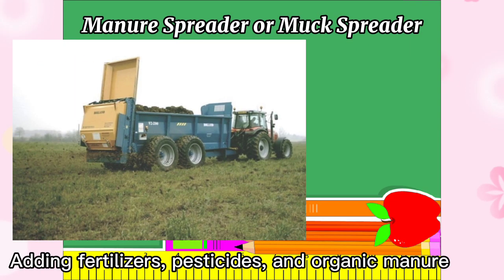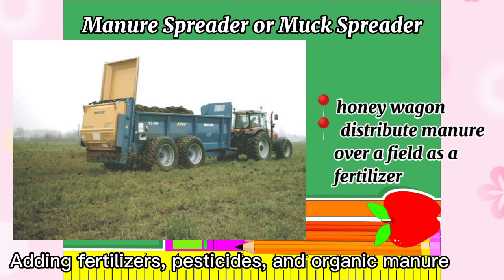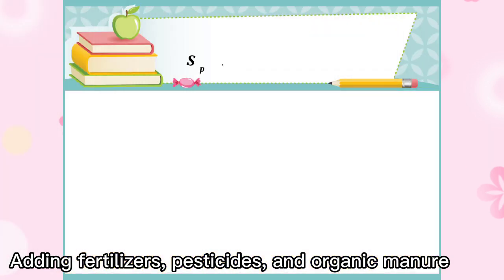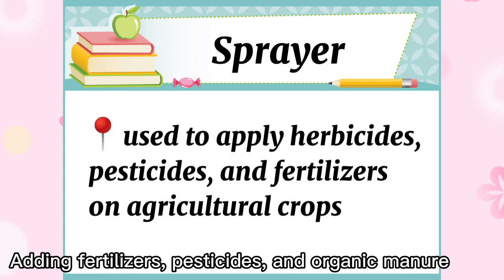Manure spreader or muck spreader is one of the agricultural machineries for adding fertilizers, pesticides, and organic manure. It is also known as a honey wagon and is used to distribute manure over a field as a fertilizer. Sprayer is used to apply herbicides, pesticides, and fertilizers on agricultural crops.